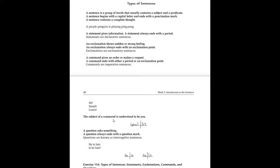The subject of a command is understood to be 'you.' In the sentence 'sit,' it only has a verb — it doesn't have a stated subject. But it's understood to be 'you.' If it was talking to Charlie, it would say 'sit, Charlie' or 'Charlie, sit.' If it was talking to Rover, it would be 'sit, Rover' or 'Rover, sit.'